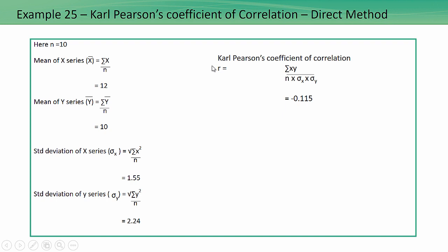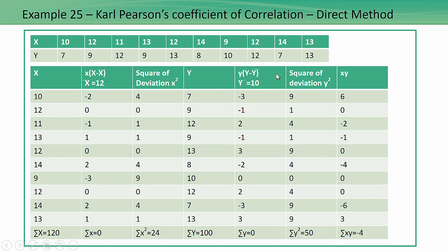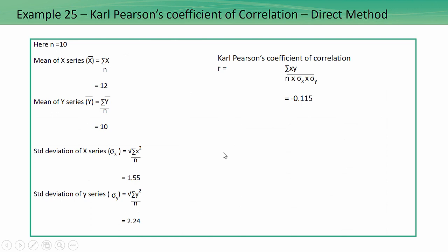Karl Pearson's coefficient of correlation is found by the formula: R equals summation of xy divided by N multiplied by standard deviation X multiplied by standard deviation Y. Summation of xy is minus 4, divided by N which is 10, multiplied by standard deviation X of 1.55, multiplied by 2.24. If you do the calculations, you will get approximately minus 0.115. This indicates there is a low degree of negative correlation between X and Y.